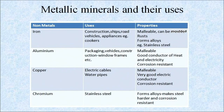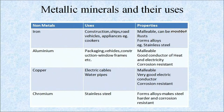A table shows metallic minerals and their uses. Iron is malleable, can be molded, forms alloys and is used for construction, ships, roads and vehicles. Aluminium is used for packaging, vehicles, construction and window frames, and has properties like malleability, good conductivity of heat and electricity, and corrosion resistance. Copper is used for electric cables and water pipes, and is malleable and a very good electric conductor. Chromium is used for making stainless steel, and its property of forming alloys makes steel harder and corrosion resistant.